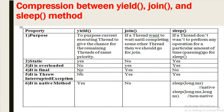Final: yield is not final, join is final, and sleep is also not final. Throws InterruptedException: yield does not throw it, but join and sleep both throw InterruptedException, which are checked exceptions so we must handle them. Native method: yield is not native, join is native, sleep(long ms) is native, but sleep(long ms, int nanoseconds) is non-native. Thanks!